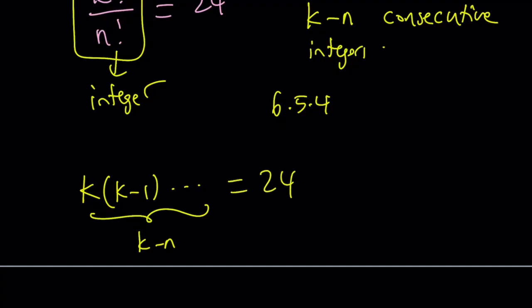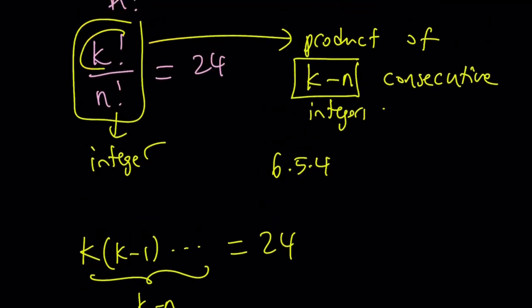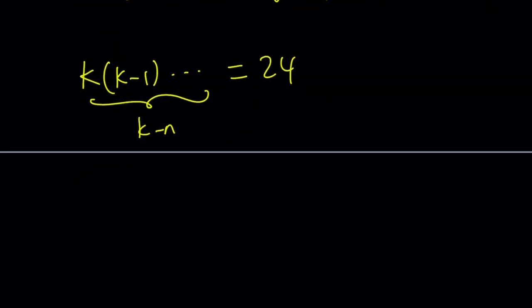And this is equal to 24. So we're going to try to write 24 as a product of consecutive integers. And then we're going to count the number. That number of numbers in the product is going to give us k minus n because that is the number. The reason is we have a product of k numbers, we're taking away n numbers, so we end up with k minus n numbers in the product. So we're looking for writing 24 as a product of k minus n consecutive integers.